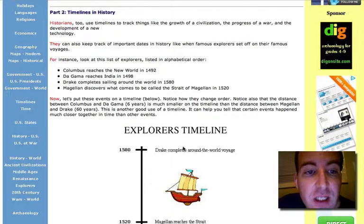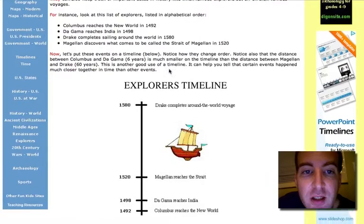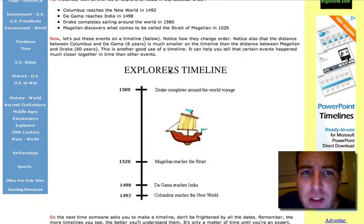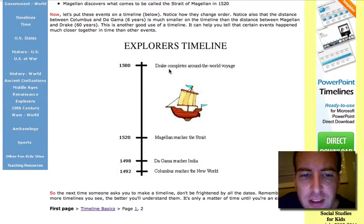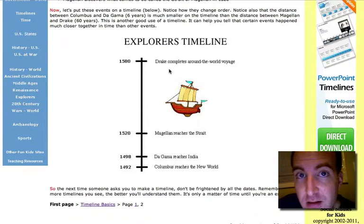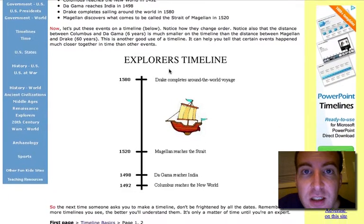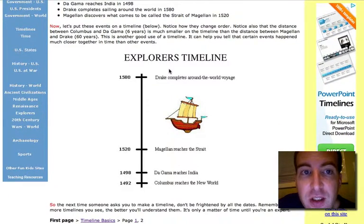Students are given a series of dates. They are asked to take those dates and put those dates and events on a timeline and notice how they change order. The problem is that the level of processing in this type of activity is very minimal. Any student who can count can do this extremely basic timeline activity.